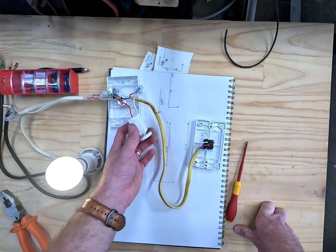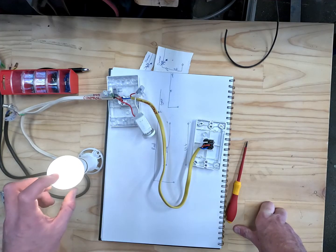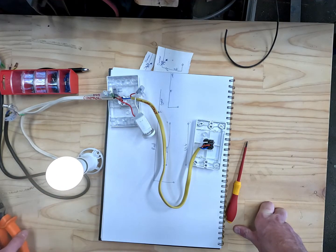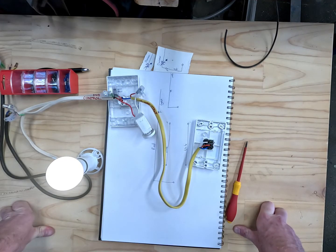Now most dimmers you get now are universal and so they'll dim an LED light, but not all LED lights are dimmable. Most pretty much every incandescent light or filament light is dimmable.